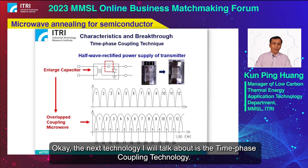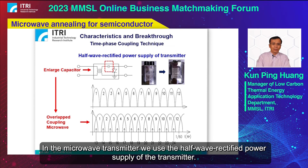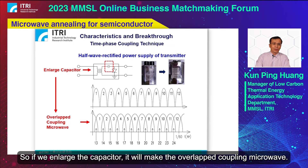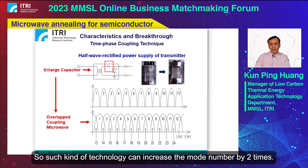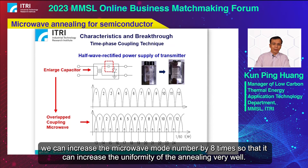The next technology is time phase coupling technology. In the microwave transmitter, we use a half-wave negative power supply. If we enlarge the capacitor, it creates overlapped coupling microwaves. This technique can increase the mode number by two times. Combining the spatial diversification technology and the time phase coupling technology, we can increase the microwave mode number by eight times.